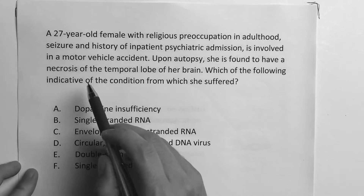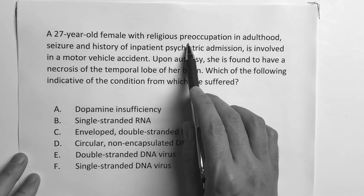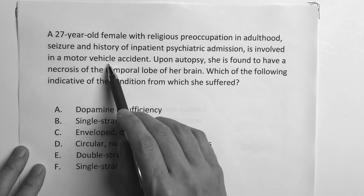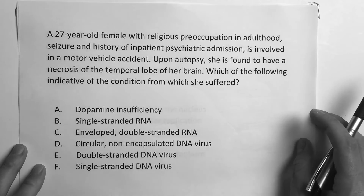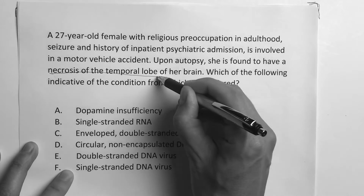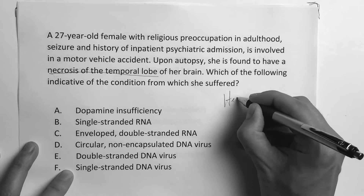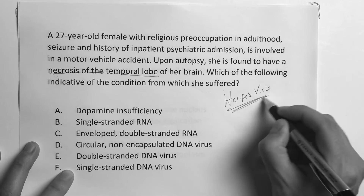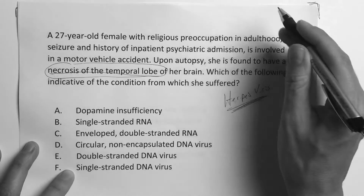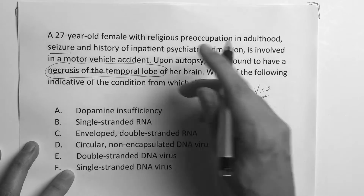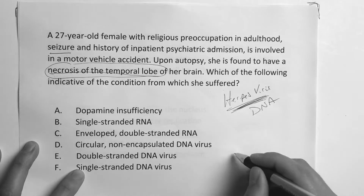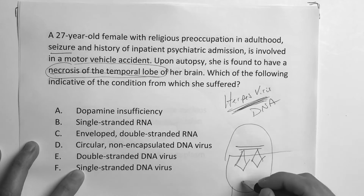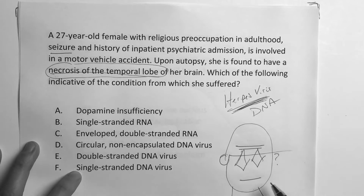This one says a 27-year-old female with religious preoccupation in adulthood, history of seizure, and history of inpatient psychiatric admission is involved in a motor vehicle accident. Upon autopsy she is found to have necrosis of the temporal lobe. Any time you see necrosis of the temporal lobe, you better be jumping all over herpes virus. Which of the following is indicative of the condition she suffered? Any time you see temporal lobe, herpes, seizure — something associating with this — you've got to have this in your differential. When you're in the DNA section, you draw that boy with the hat and you should be able to blow through all your DNA viruses.